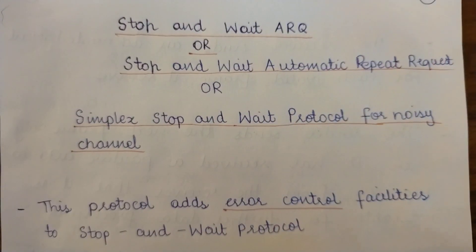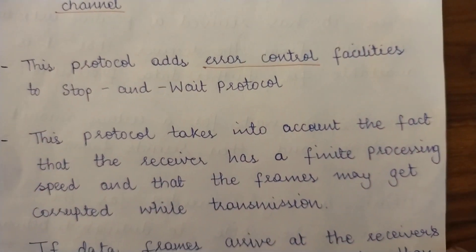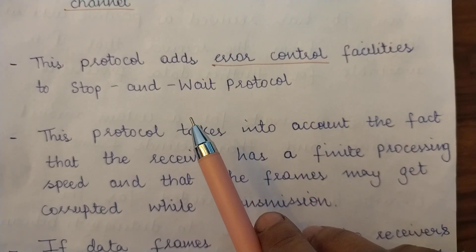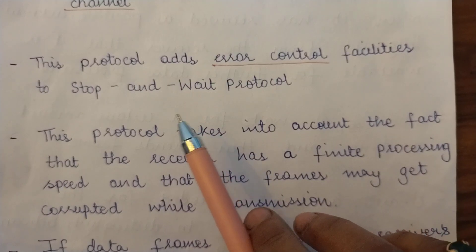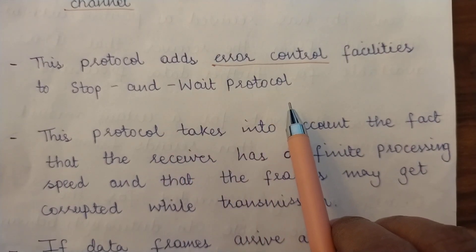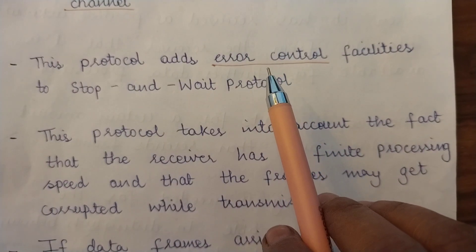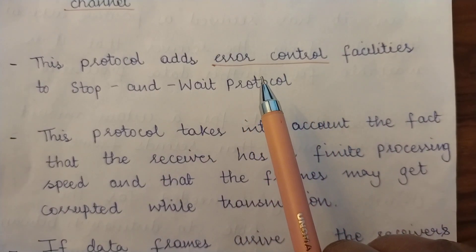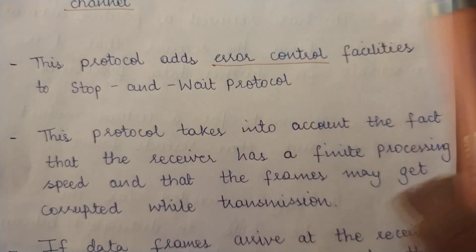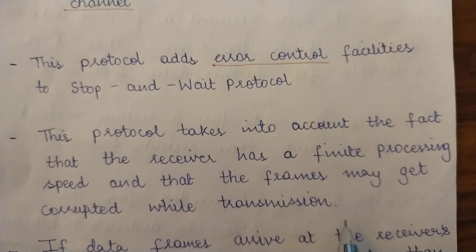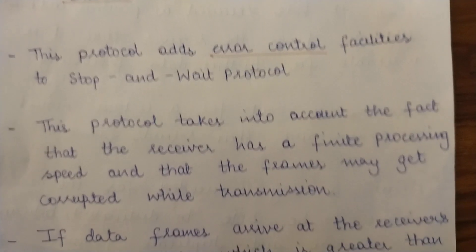This protocol adds error control facilities to the Stop and Wait protocol. In our previous video we studied the simplex Stop and Wait protocol. The Stop and Wait ARQ adds error control facilities to that protocol, taking into account the fact that the receiver has a finite processing speed and that frames may get corrupted during transmission.